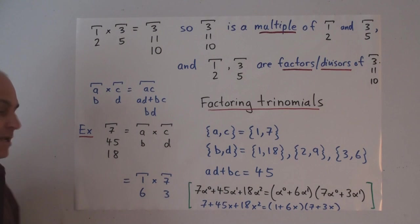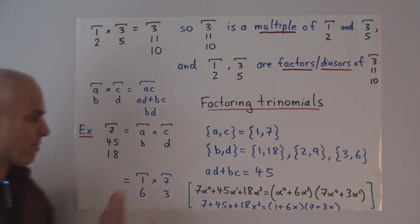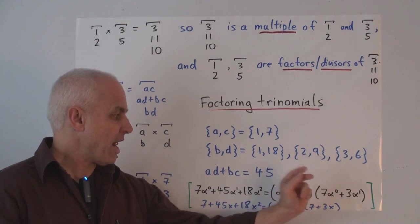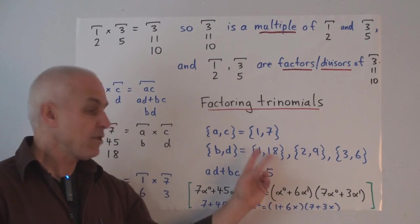Similarly, B times D has got to equal 18. So now there are more possibilities because 18 is not prime. They could be 1 and 18 or 2 and 9 or 3 and 6 in either order.